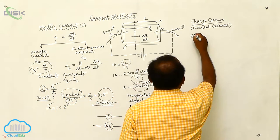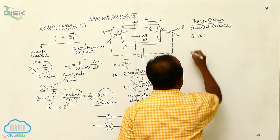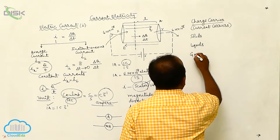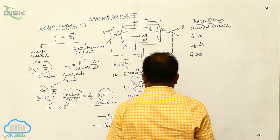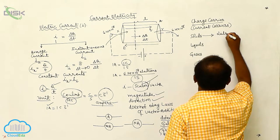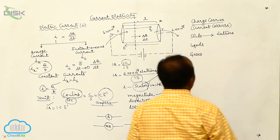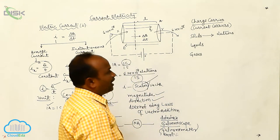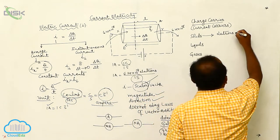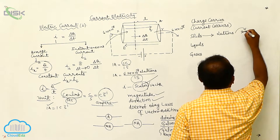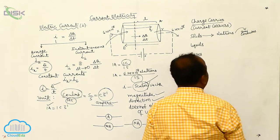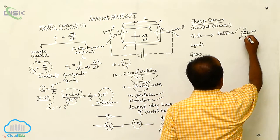We know that in solids, liquids, and gases, the current carriers are electrons. In solids, the current is due to free electrons. In semiconductors, the current is due to the electrons and holes.